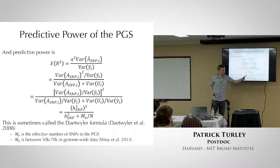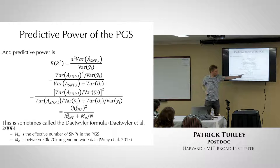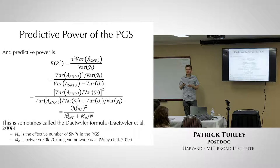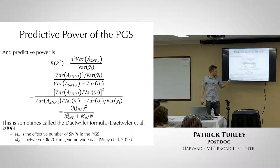As n increases to infinity, the noise term goes to zero and the predictive power converges to h²_SNP — confirming that larger sample sizes approach the SNP heritability. If n is very small, the denominator becomes large, giving very small predictive power. Me is the effective number of SNPs, which accounts for LD — if all SNPs were independent, Me would equal K, but with LD it's smaller. In genome-wide data, Me is estimated to be somewhere between 50,000 and 70,000.